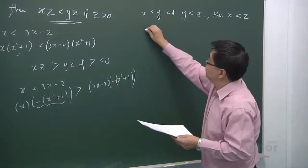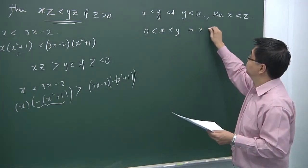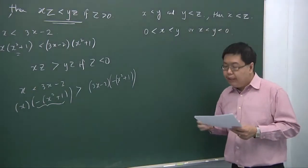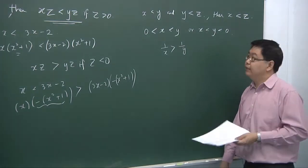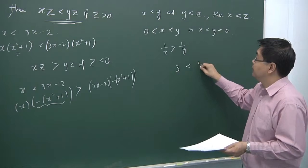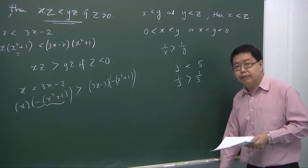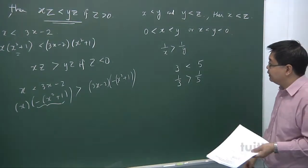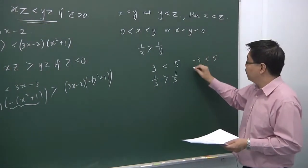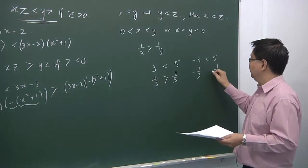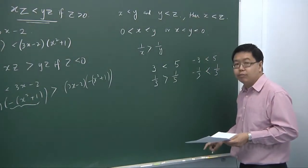The last property says that if x and y are both positive numbers or both negative numbers, then taking the reciprocal of both sides will change the inequality sign. For example, 3 is less than 5, but one third is greater than one fifth. However, this property is violated if one value is negative and the other is positive — for instance, negative 3 is less than 5, but taking reciprocals does not change the sign. So you need to ensure both x and y have the same sign before applying this property.